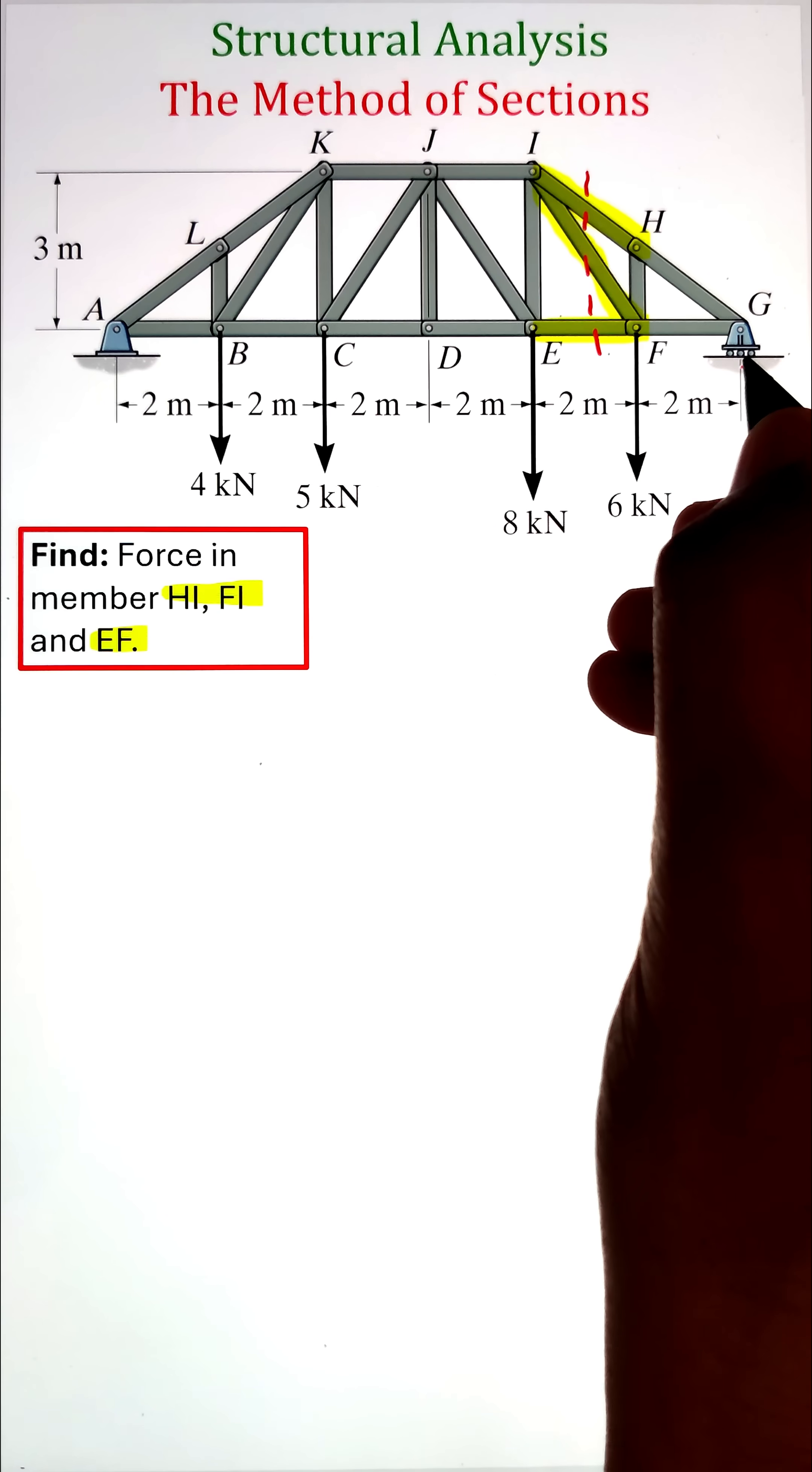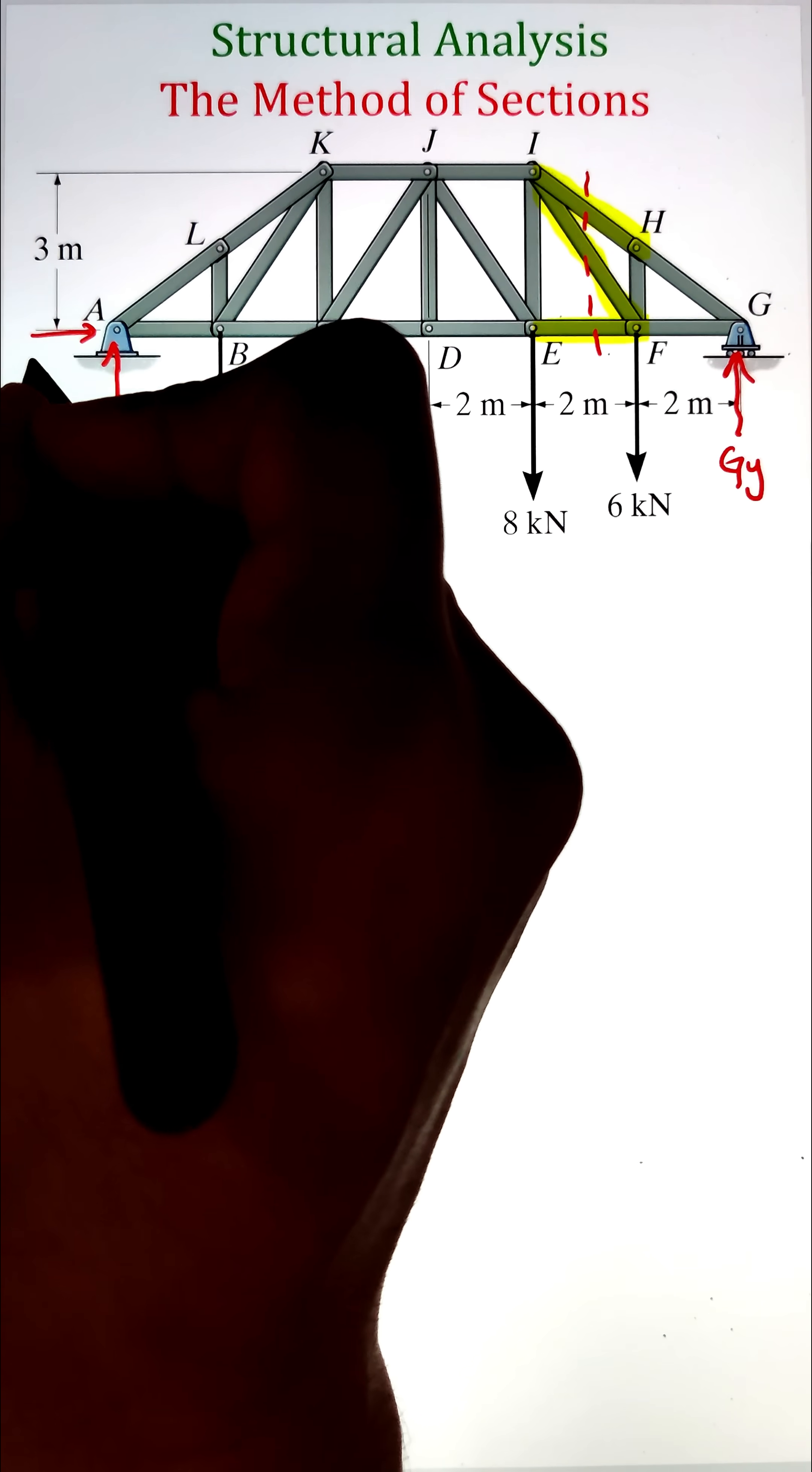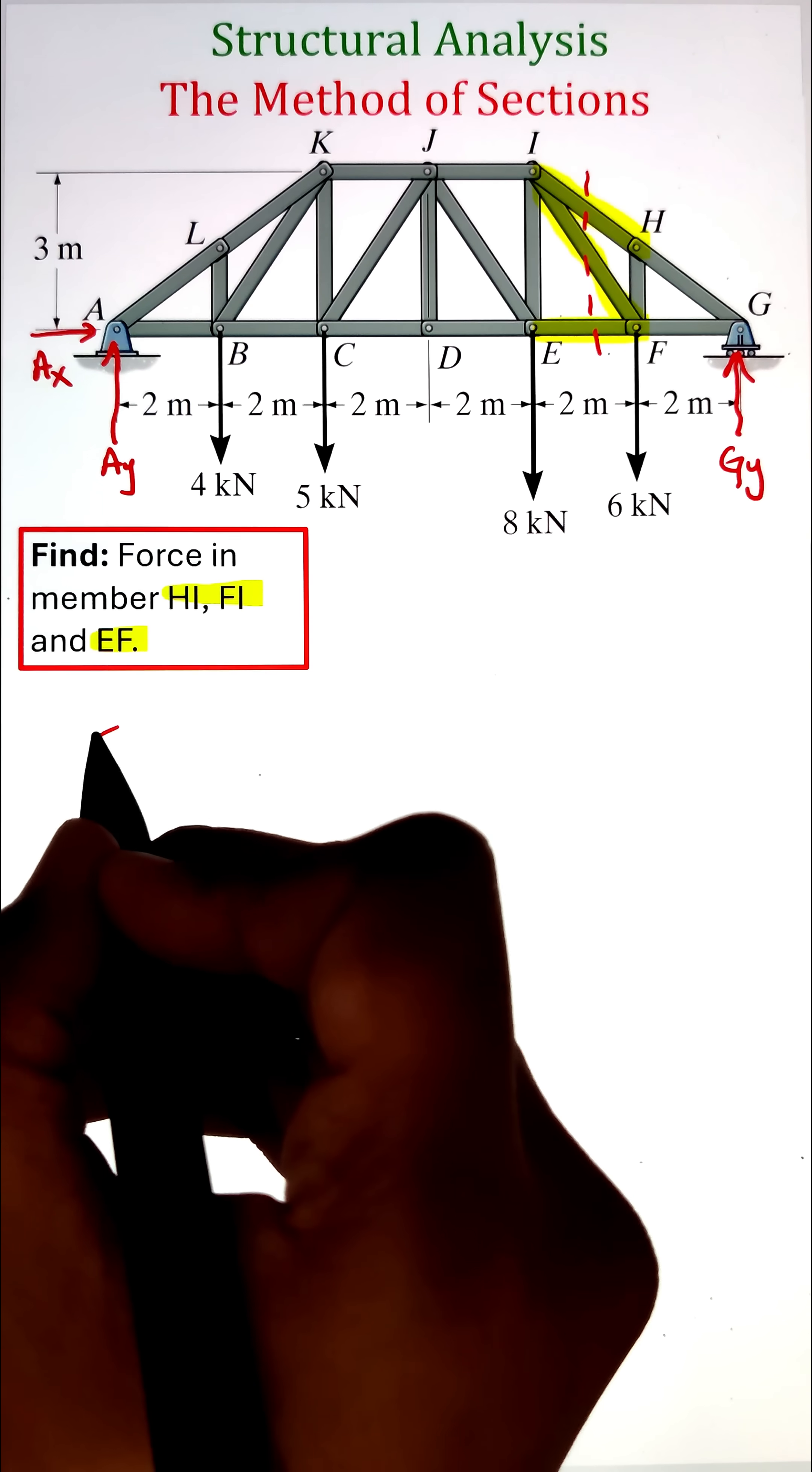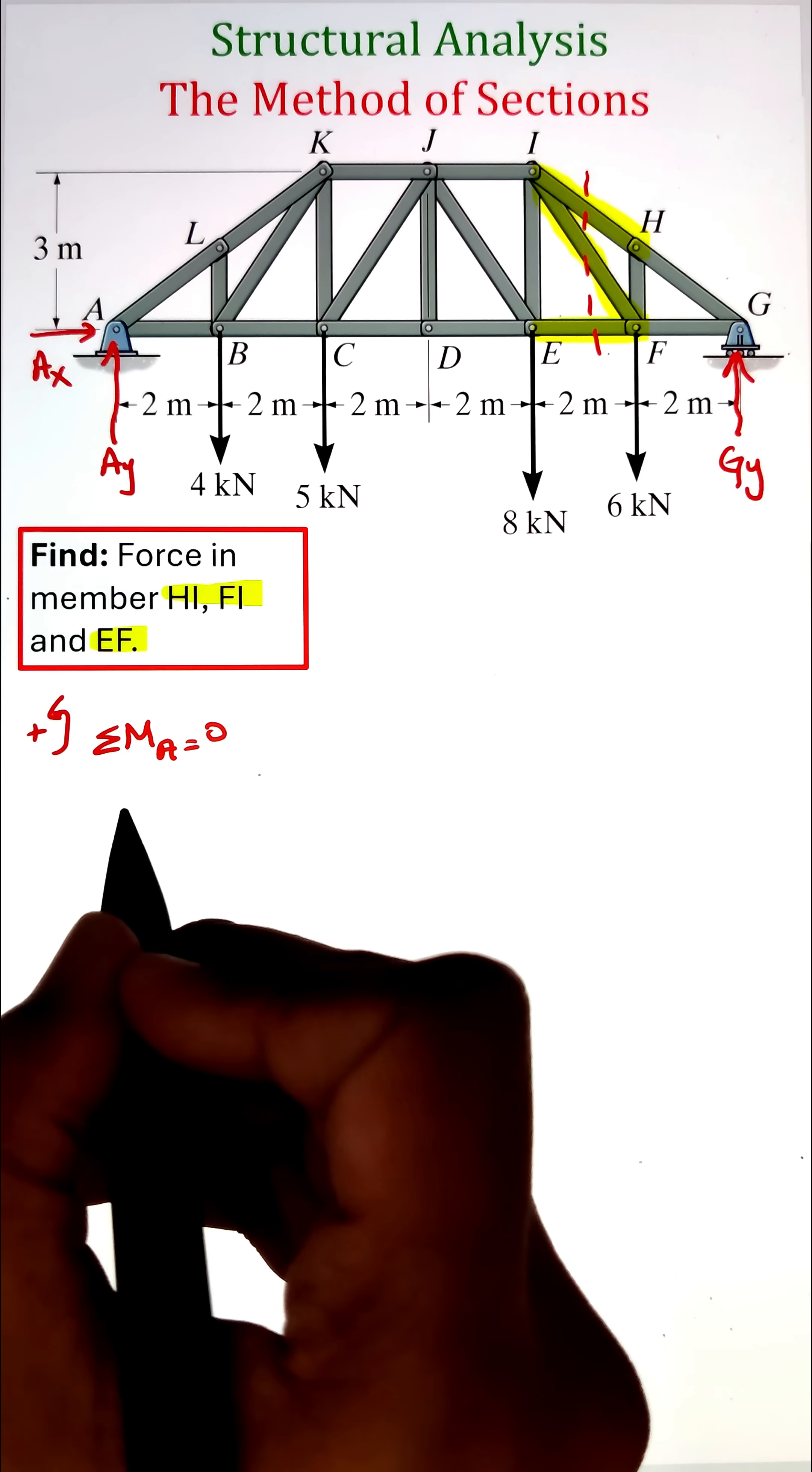Here we have created a section along the three members HI, FI, and EF. We can pick either of the two halves to figure out the reactions along those members. In this case, we will pick the smaller half since it will be easier to solve.